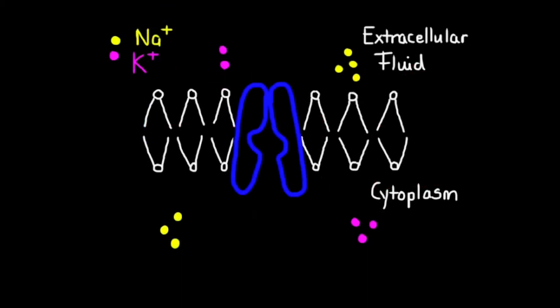So let's look at the sodium-potassium pump in a little more detail. The role of this pump is to move sodium ions from the cytoplasm where they are at a low concentration to the extracellular fluid where they are at a higher concentration.